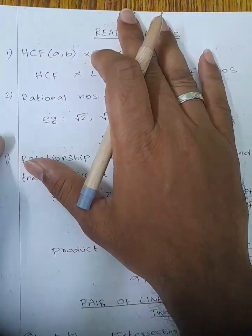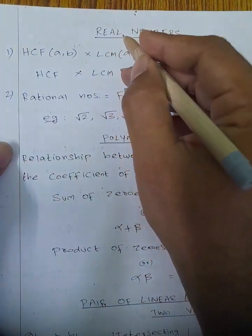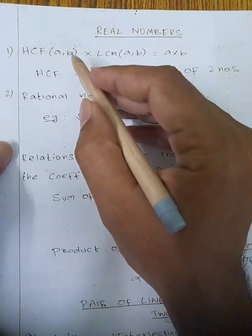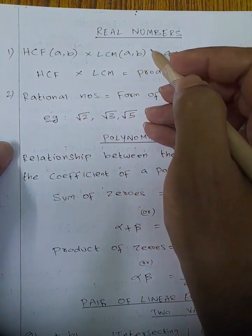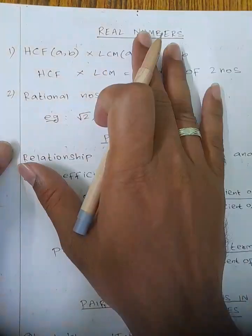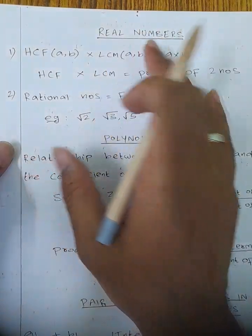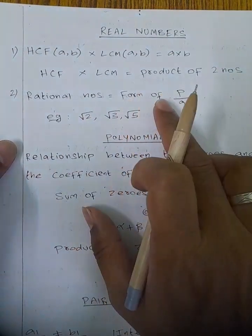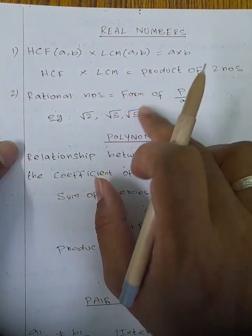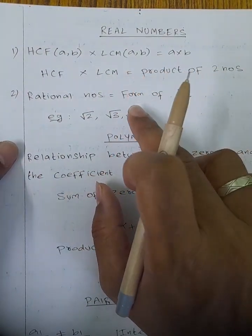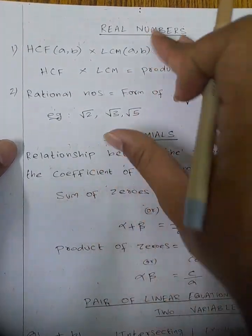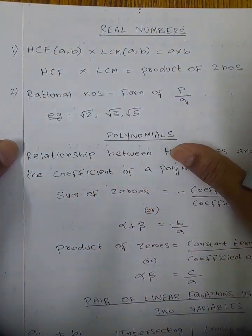What are the formulas? First, real numbers. The first concept: HCF × LCM is equal to the product of two numbers. These are basic formulas. Second, rational numbers — proving that root 2, root 3, and root 5 are irrational numbers. They are expressed in the form p by q. These are the two concepts in real numbers.